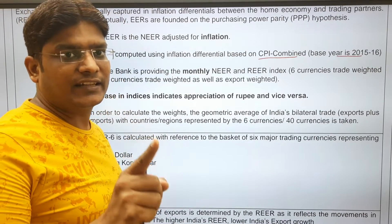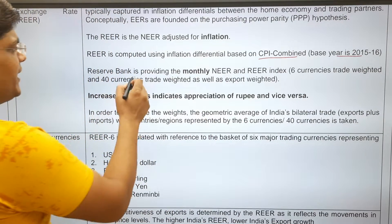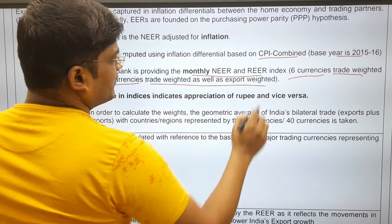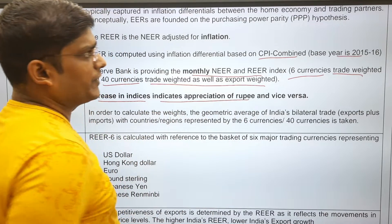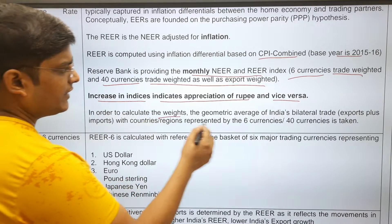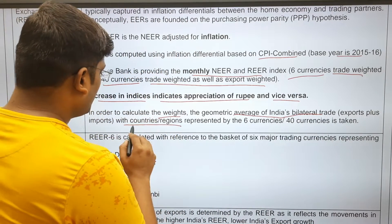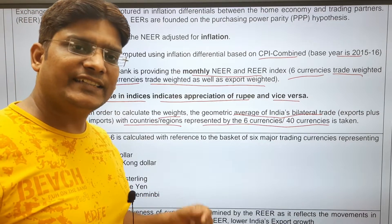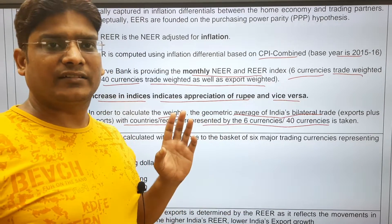REER and NEER are not exchange rates — they are indices, and for calculating an index we also take a base year. The RBI provides monthly NEER and REER indices for 6-currency trade-weighted, 40-currency trade-weighted, and export-weighted baskets. An increase in the indices indicates the appreciation of the rupee, and vice versa for depreciation. To calculate the weight, a geometric average of India's bilateral trade — exports plus imports — with the countries represented by the 6-currency and 40-currency baskets is taken. The NEER and REER indices indicate whether the Indian currency has appreciated or depreciated against its major trading partner currencies.